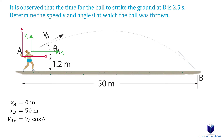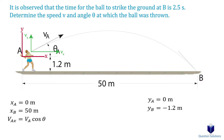Now we can write what we know for the vertical components. Point A is at 0 meters. Point B is at negative 1.2 meters. Notice how point B is below point A — in other words, it's below the x-axis of our coordinate system, which means it's a negative value. The vertical component of velocity as it's being thrown upwards is a positive value, which is V sin theta. We also have gravity, which is downwards in pretty much every case, so that's negative 9.81 meters per second squared. The question also says it took the ball 2.5 seconds to strike the ground, so that's our time value.